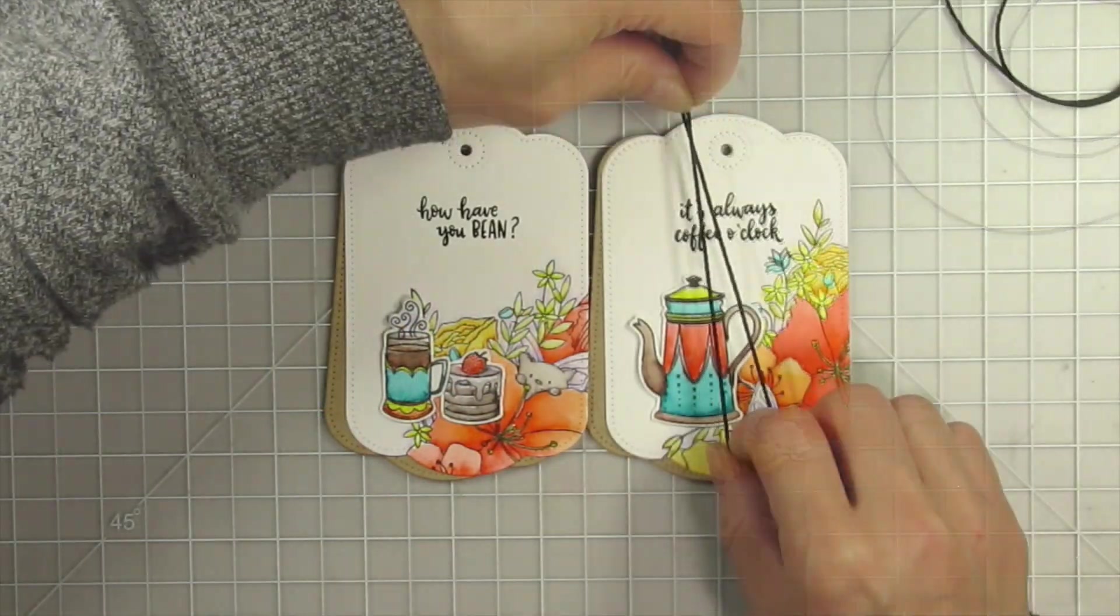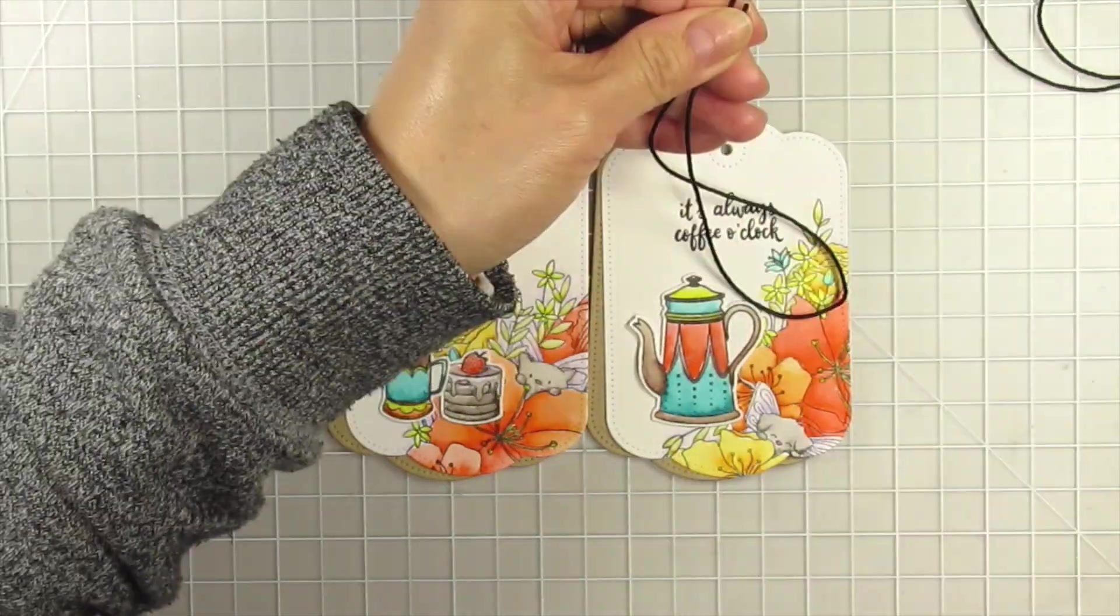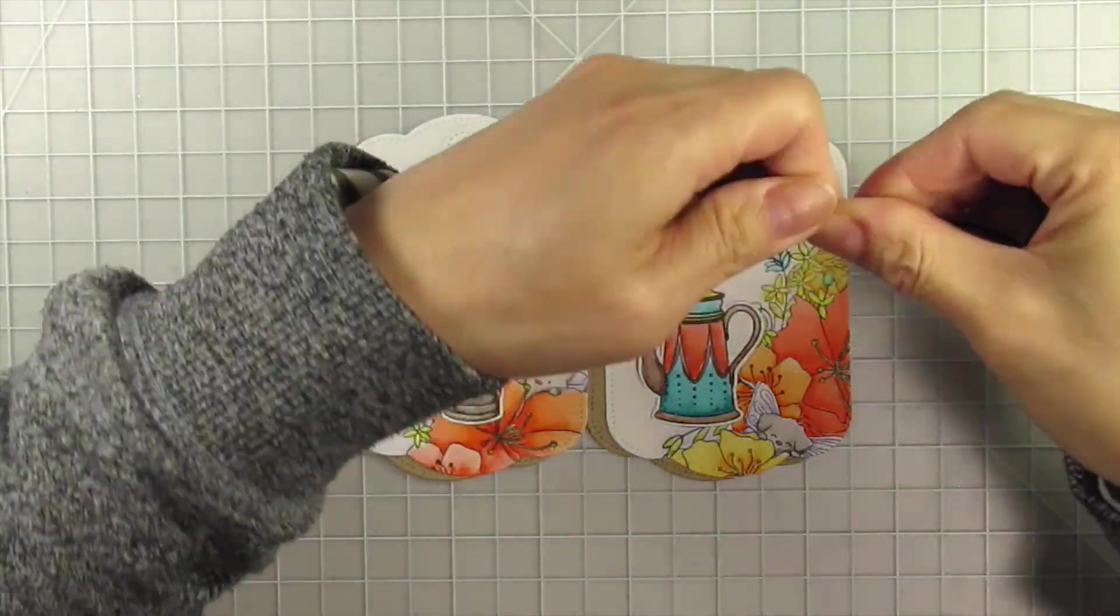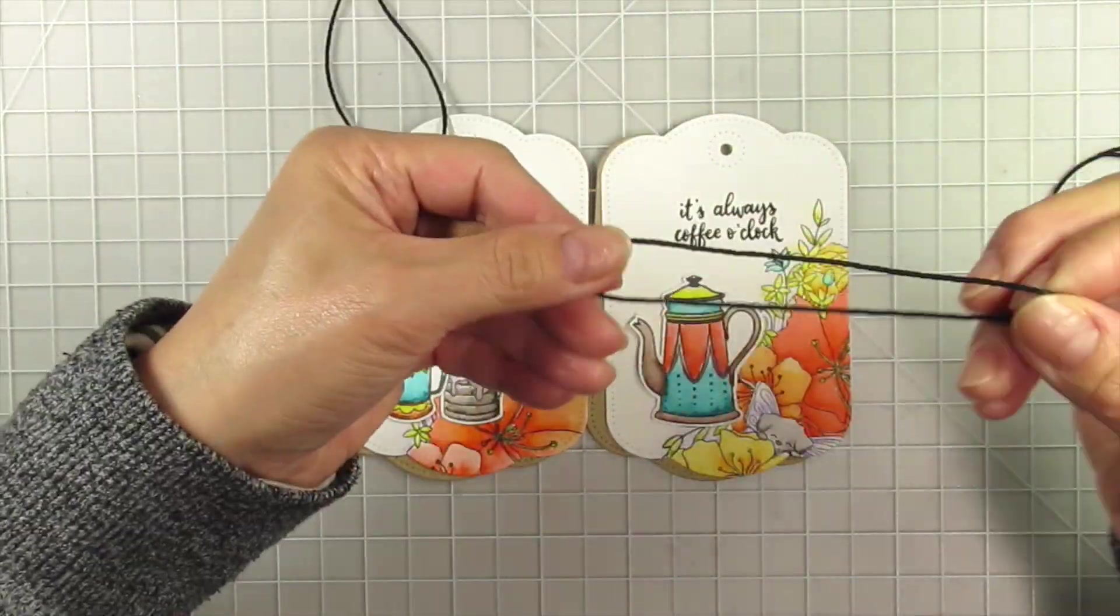Next, I adhere the images with glue dots and cut hemp cord for the ties. Whenever I cut ribbon or twine for tags, I always make it one and a half times the length of the tag. I find this length looks best.